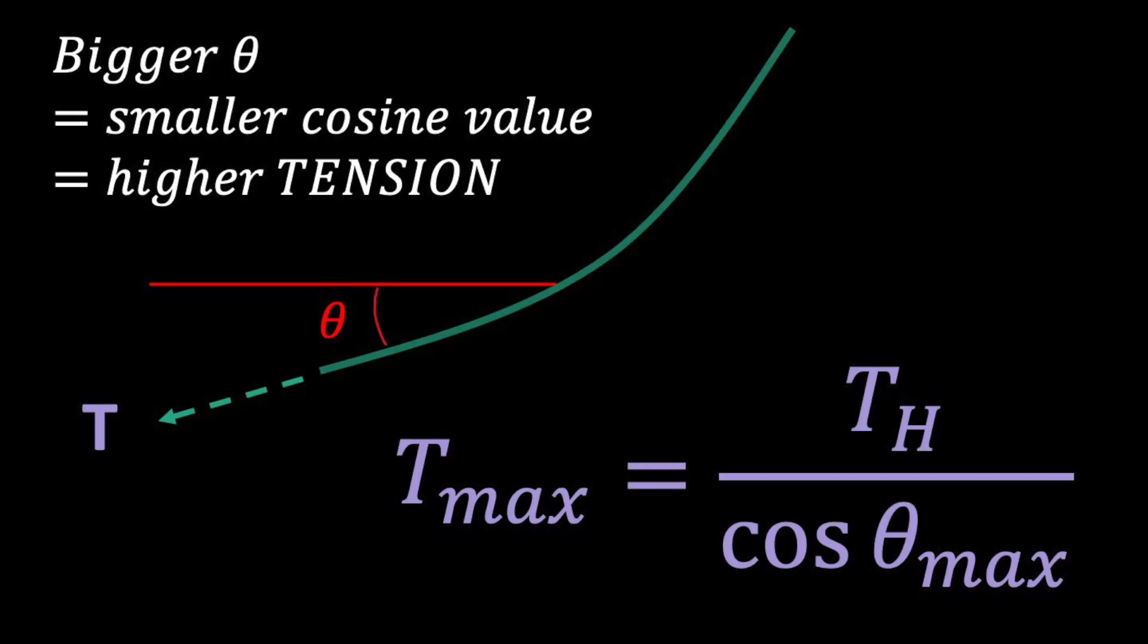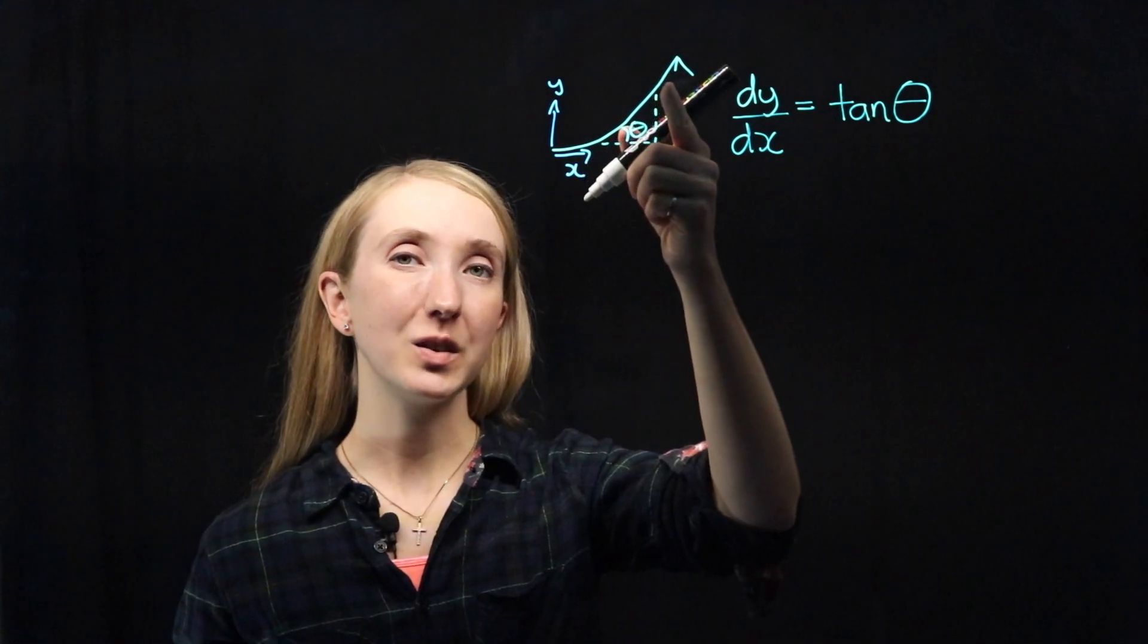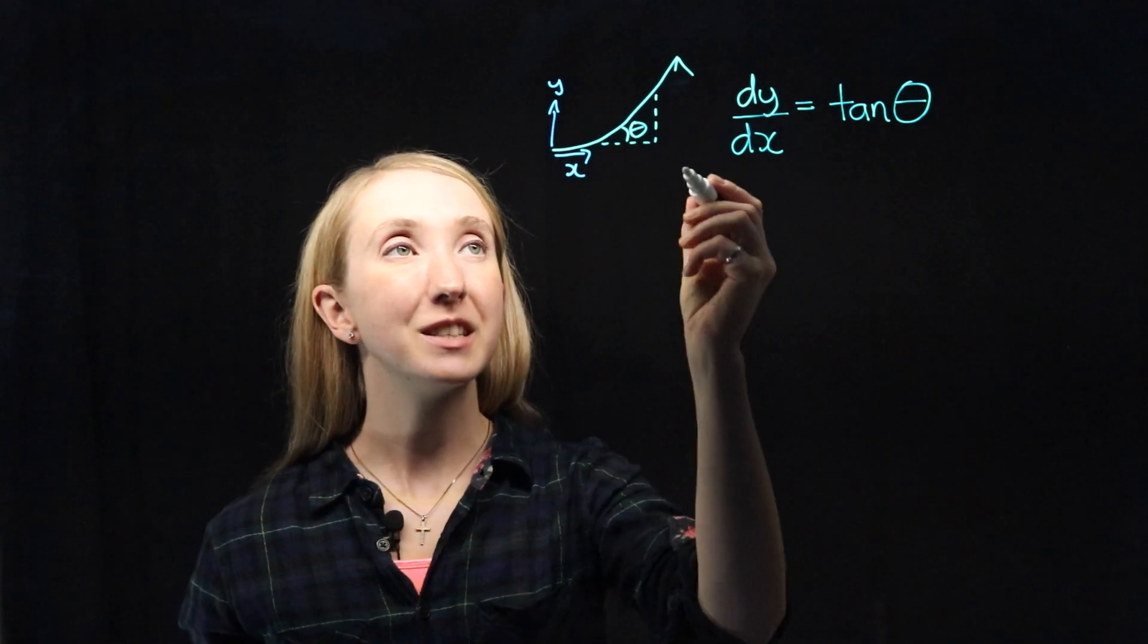Now back to our max tension. Last time we learned that the tension in our cable changes as a function of the cable angle. Between 0 and 90 degrees, the value of cosine decreases as the angle increases. Since our tension is inversely proportional to the cosine of our angle, tension increases as our angle also increases. So our max tension will occur where we have our max angle. Where do we have our maximum angle? It's near the support, where the slope in our cable is also its maximum. The slope and the angle are related through the tangent. Opposite over adjacent.